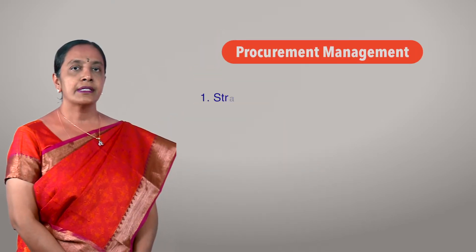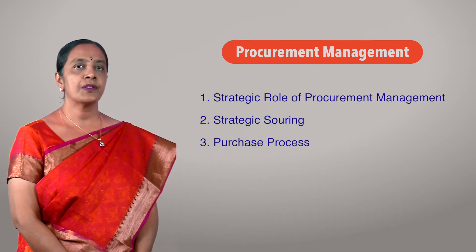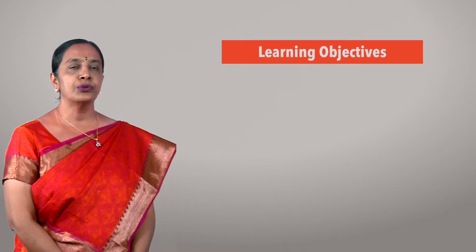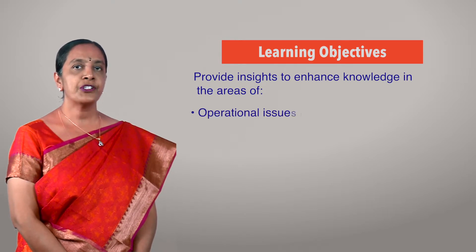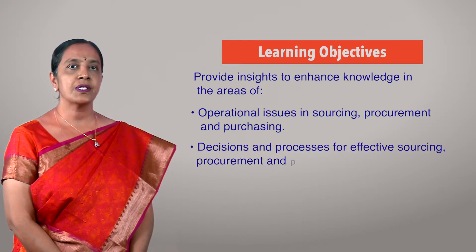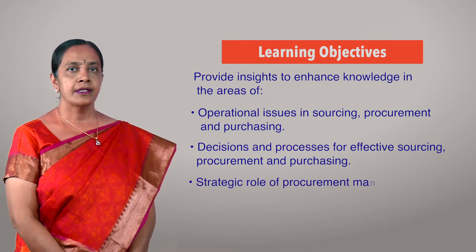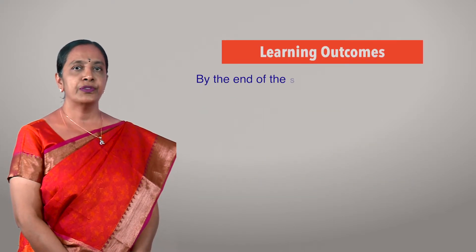Having understood the impact of procurement function across supply chain activities, we will move on to the three important areas in procurement management and supply chain: the strategic role of procurement management, strategic sourcing, and the purchase process. The learning objectives of this module are to provide insights to enhance knowledge in operational issues, sourcing, procurement and purchasing decisions, and processes for effective sourcing.